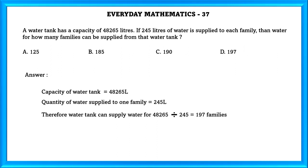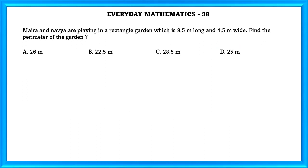Therefore, water tank can supply water for 48,265 divided by 245 which equals 197 families. So our answer is 197.